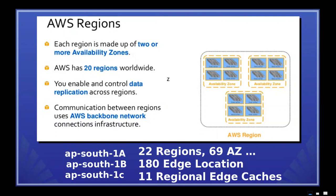Each availability zone has its own power, cooling, and so on. You can compare the three available locations. If you want a second location, you will have three availability zones — each in a separate small area. We are already in the process of adding extra regions and increasing the number of available regions.